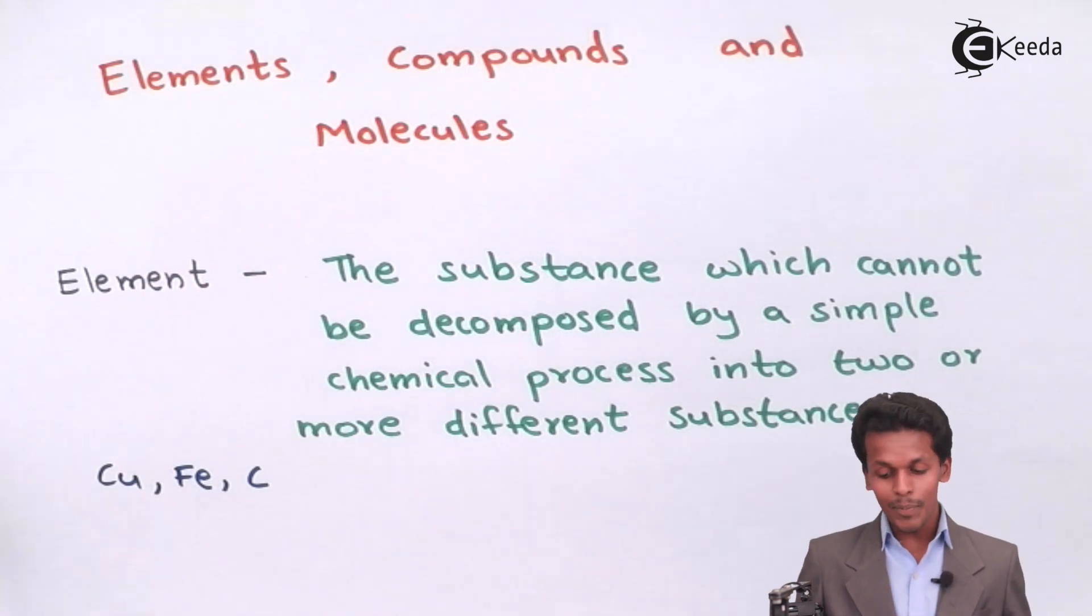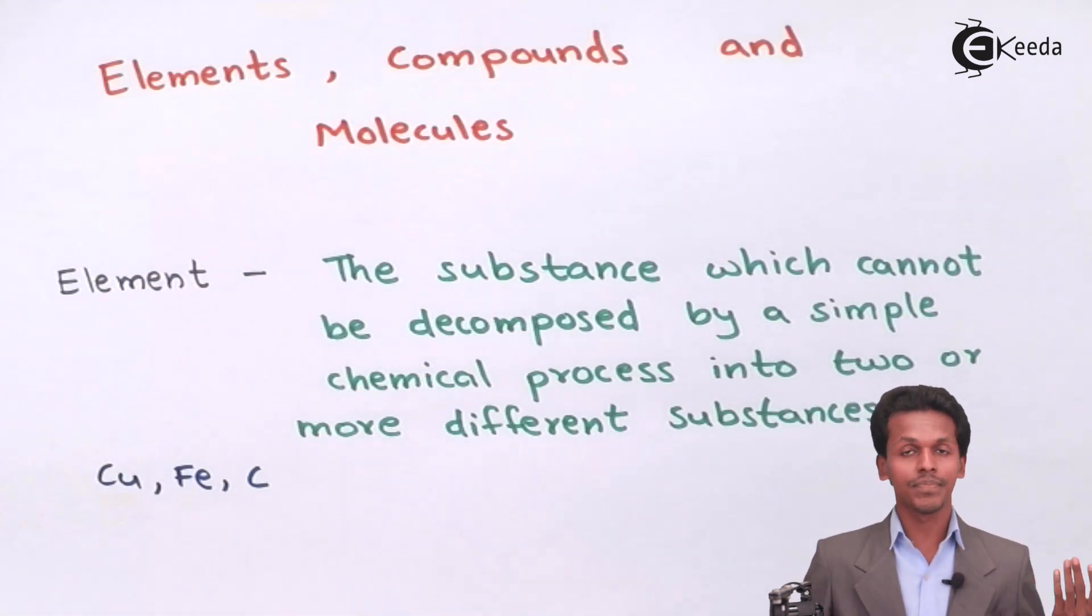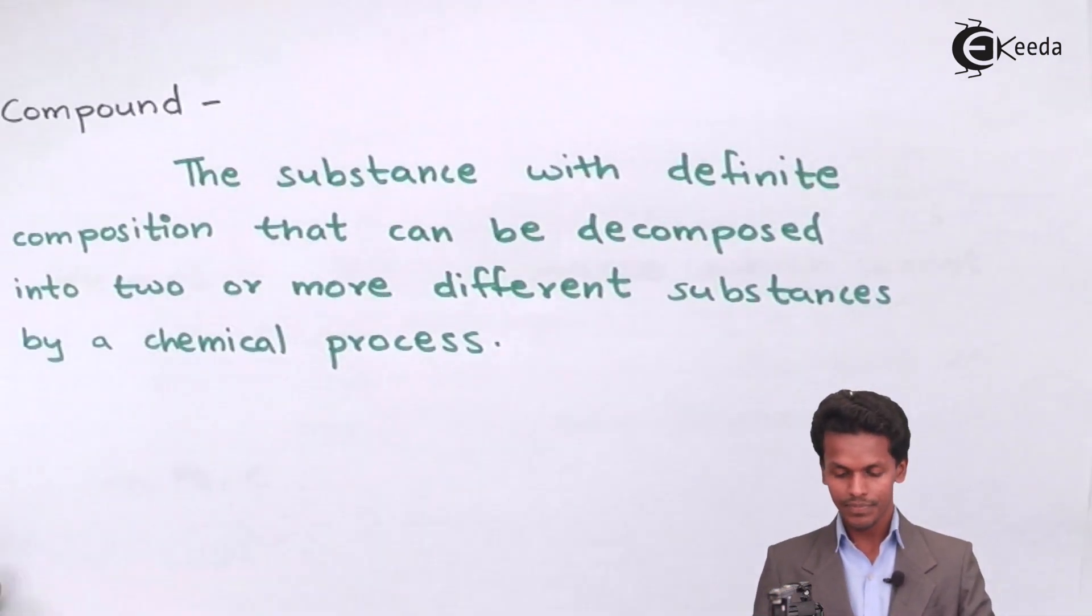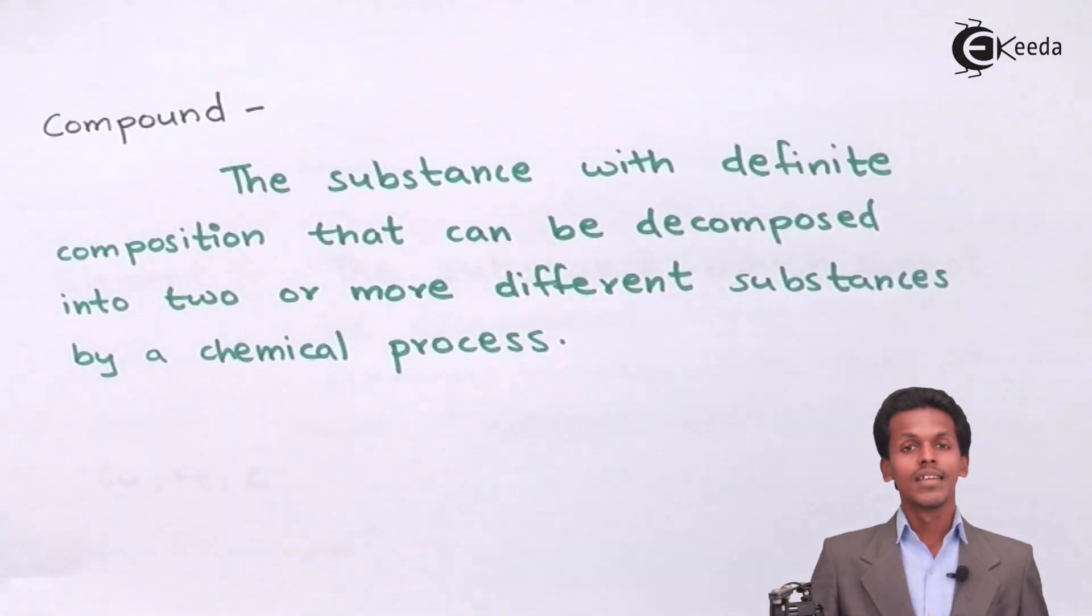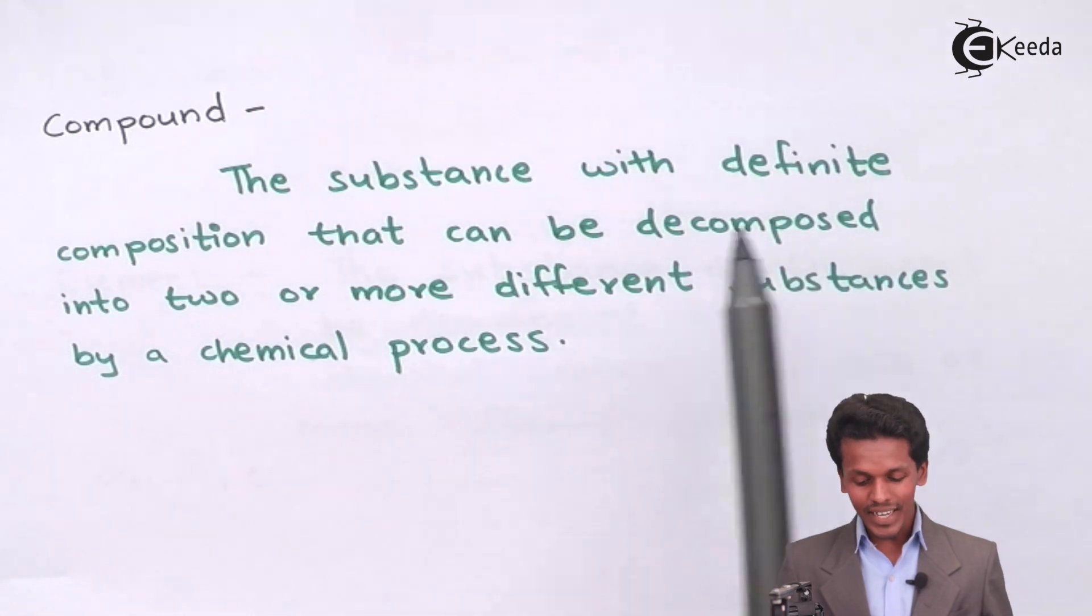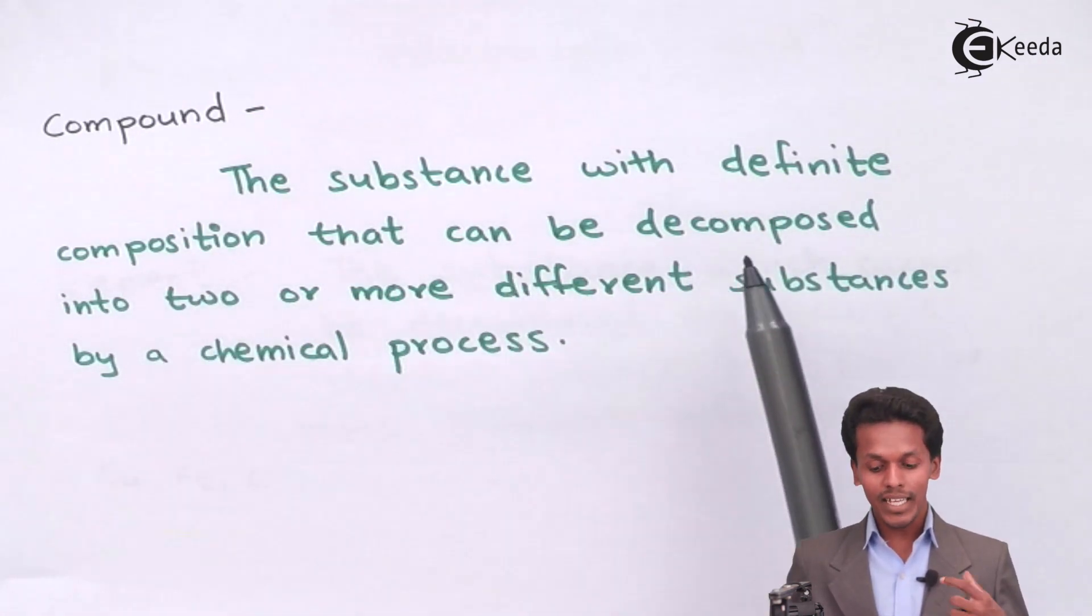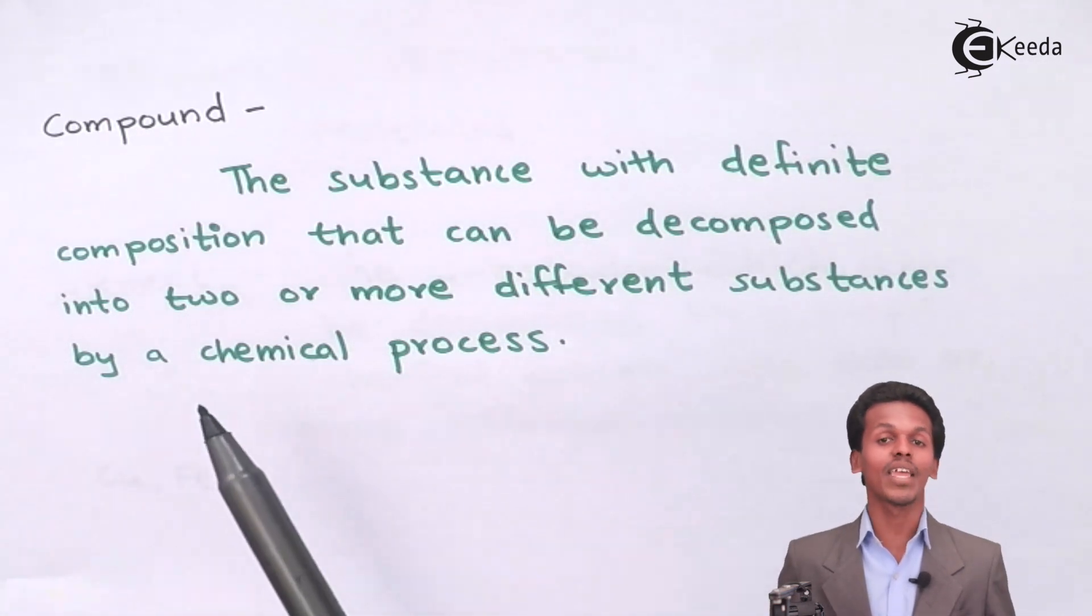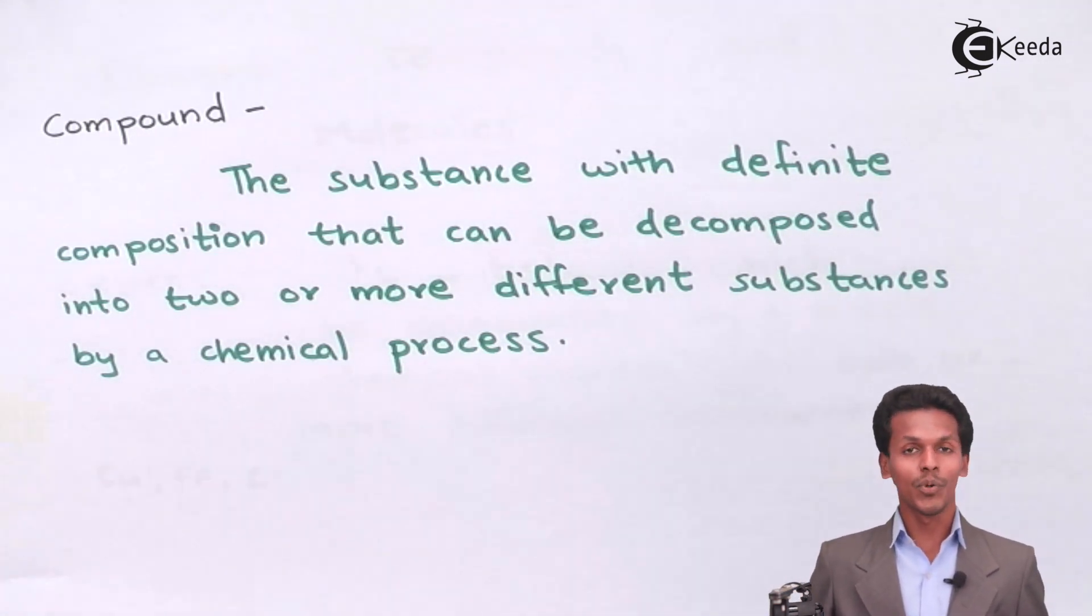Now the element has been clearly mentioned to you, and now let me talk about what we mean by compounds. So compound is the substance with definite composition that can be decomposed into two or more different substances by chemical process.